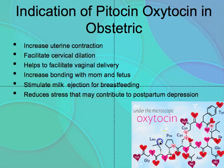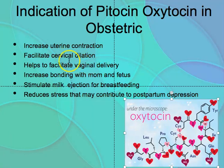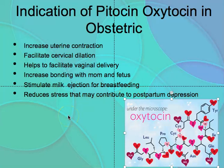Now let's look at pitocin. Pitocin is the hormone oxytocin, released by the posterior pituitary gland. In obstetrics, oxytocin is used to increase uterine contractions, facilitate cervical dilatation, facilitate vaginal delivery, increase bonding between mom and fetus, stimulate milk ejection for breastfeeding, and reduce stress that may contribute to postpartum depression.